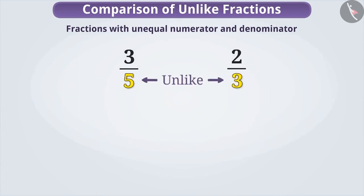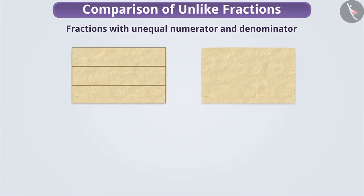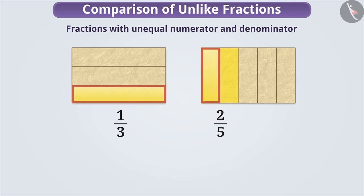Now imagine if both numerators and denominators of fractions are not equal, then how do we compare them? Suppose we take two similar types of paper. We make three parts of one and five parts of another. If we take one part of the first paper, it will be represented as the fraction 1 by 3. Similarly, if we take two parts of the second paper, then it will be represented as 2 by 5. Here, the denominators of both are not equal and nor is the shape of their parts. Similarly, their numerators are also not equal, meaning the number of parts taken is different. Therefore, it is difficult to compare them.